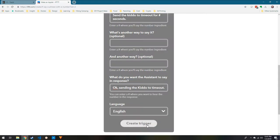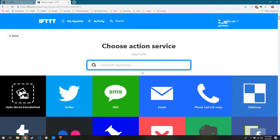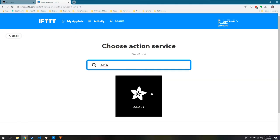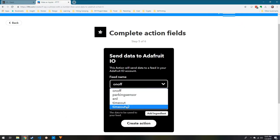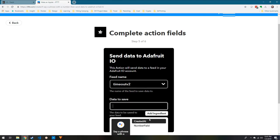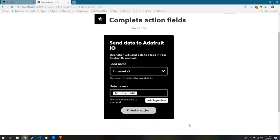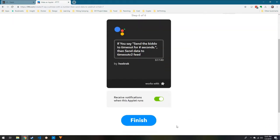For our action, I'm going to select Adafruit. The first time you select this action, it'll ask you to authorize If This Then That to access AIO. Then it will give you a list of feeds from which you should be able to select the one that you defined earlier. Click Add Ingredient and select Number Field. Now we can review and finish, and test our applet.